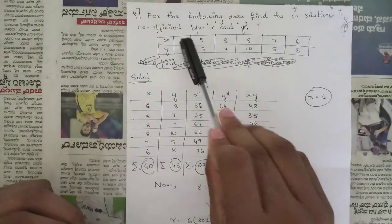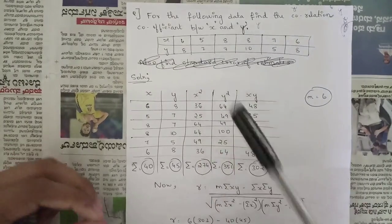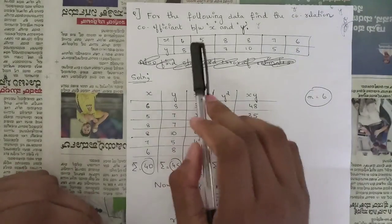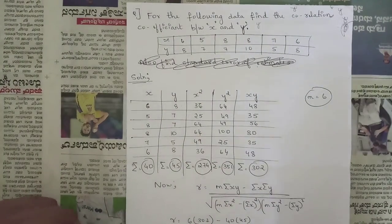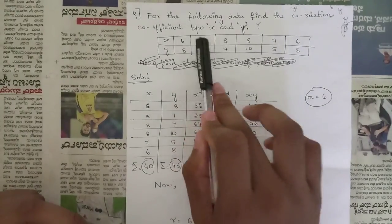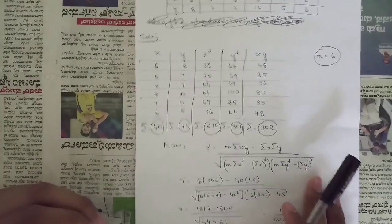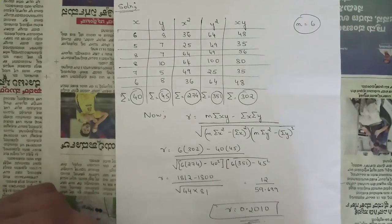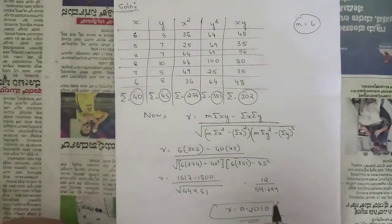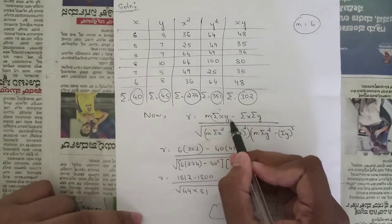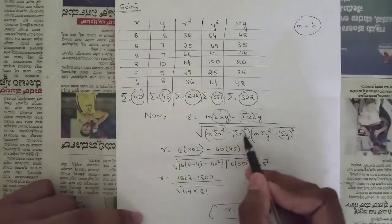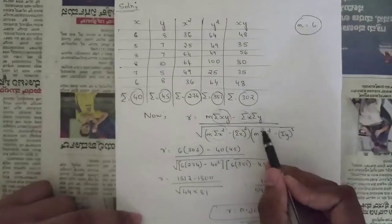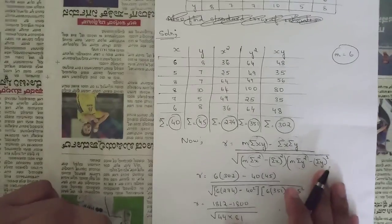The next question asks us to find the correlation coefficient between x and y for the following data. First, note the number of observations. Here we use the second formula for correlation coefficient r, which requires: summation of xy, summation of x, summation of y, summation of x², (summation x)², summation of y², and (summation y)².